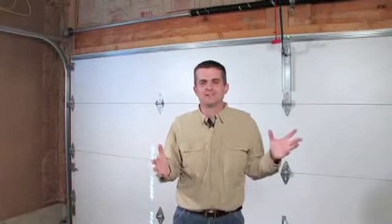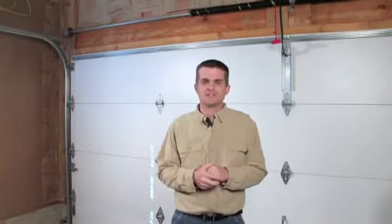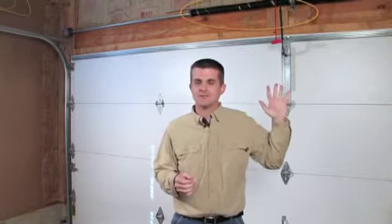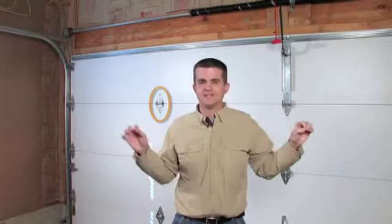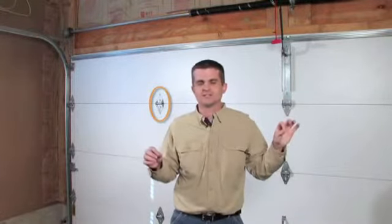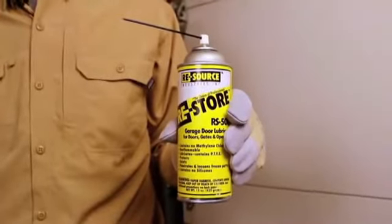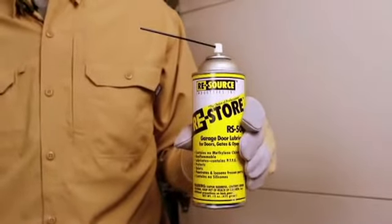Another form of general maintenance that you can perform yourself a couple times a year is the lubrication of your garage door. There are three areas to focus on here: the springs above the garage door, the hinges between the sections, and the roller areas. What you want to use is garage door lubricant. Never use a penetrating oil.